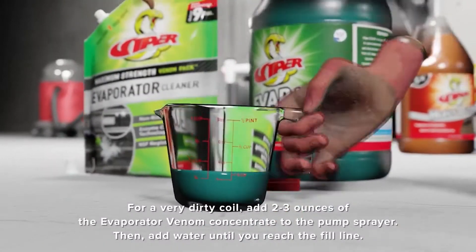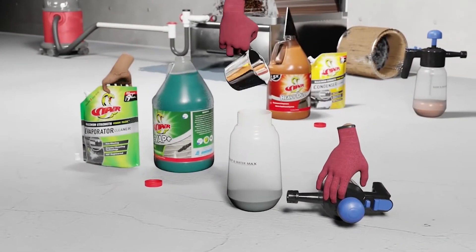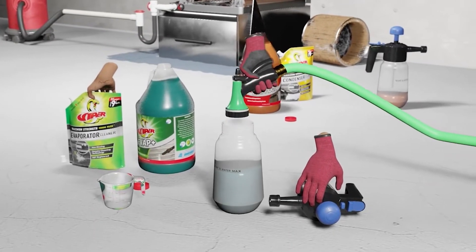In the case of the Venom Pack, you would add only 2-3 ounces of the concentrate to the pump sprayer and then fill the sprayer with water up to the fill line.